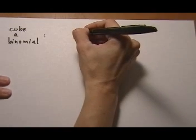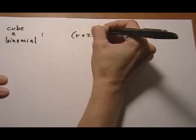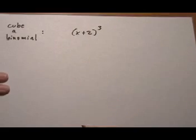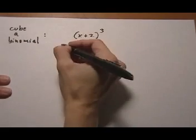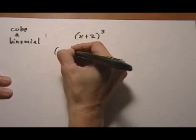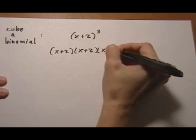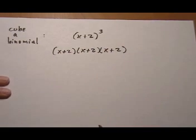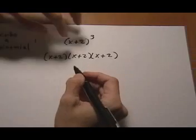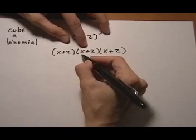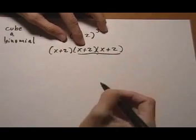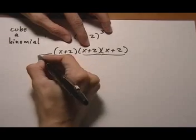Let's say we have (x + 2) cubed. We write it as (x + 2) times itself three times. Then we start to FOIL out—doesn't matter which ones you start with. I'll start with these two; this guy's just going to tag along for now.